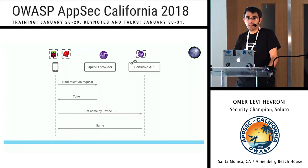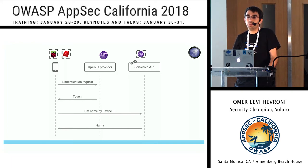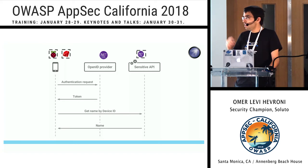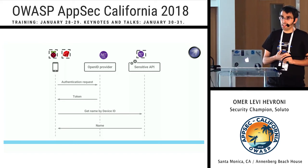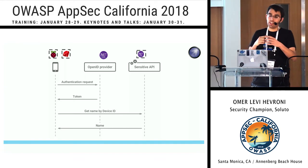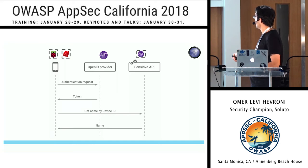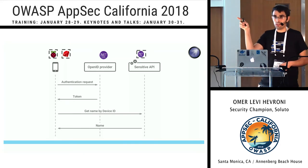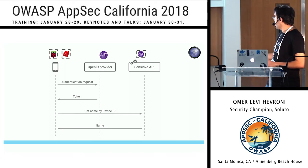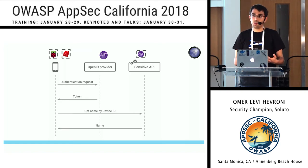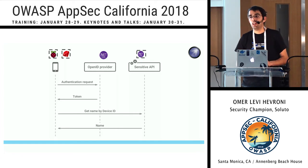A follow-up question: given you have a private key on the device and a public key on the server, why not encrypt the token in transit so that if TLS fails, your token is still protected? The token is not just for the device - the token is what the device uses to authenticate to our APIs. For example, to talk with the sensitive API, the device needs to pass this token using an authorization bearer scheme. The sensitive API needs to be able to validate and decode this token, which is how OpenID works.